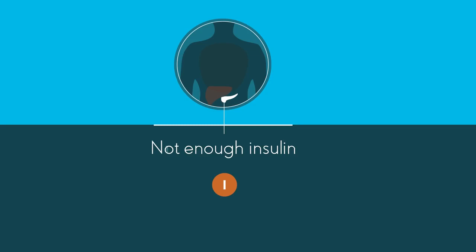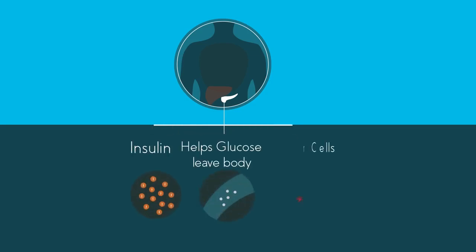Insulin helps glucose leave our blood and enter into our body's cells. Let's have a look at this process in a little more detail.